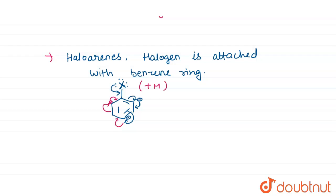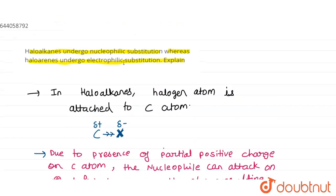Since the halogen atom releases electron density towards the benzene ring via the +M effect, the electron density at the ortho and para positions increases. This makes these positions favorable for electrophilic attack rather than nucleophilic attack. Hence, haloarenes undergo electrophilic substitution reactions. I hope this answers your question — thank you.